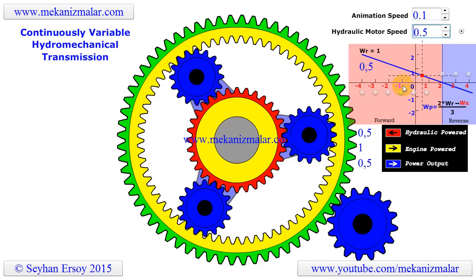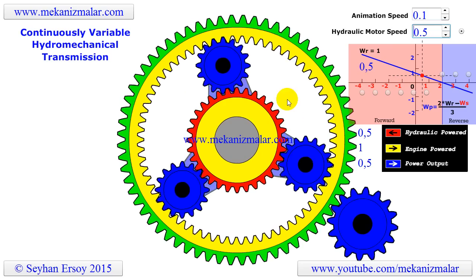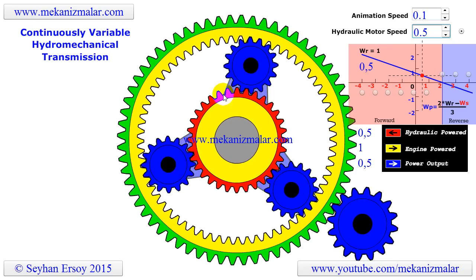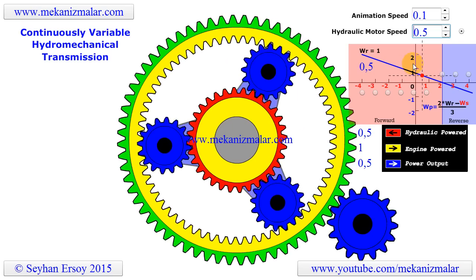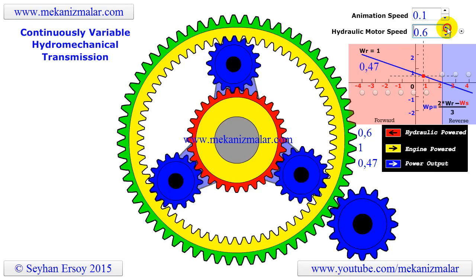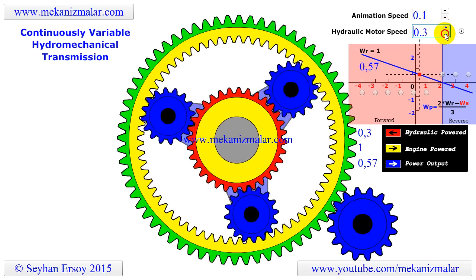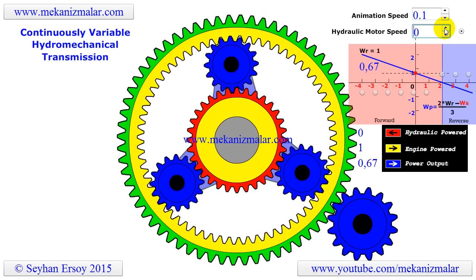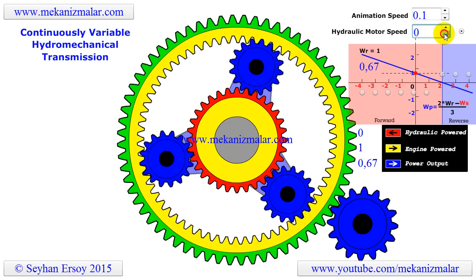When a planetary gear system with a constant ring gear speed is combined with a hydrostatic transmission driven sun gear, it creates a continuously variable transmission system. These systems, also known as CVT systems, are often used within farm and construction power equipment.